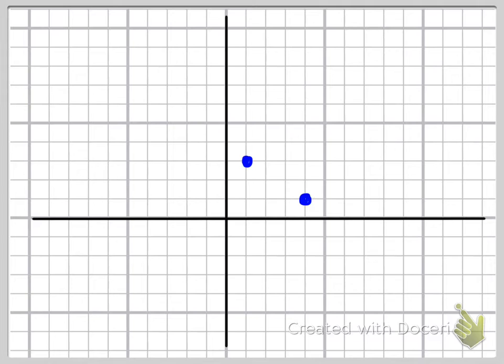One thing to make this easier, I'm always going to look from left to right, so I'm going to look at the point on the left and go to the point on the right. That's going to help out with the run part of the rise over run.